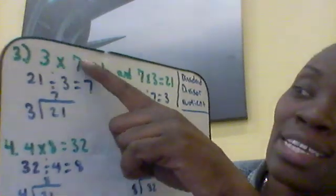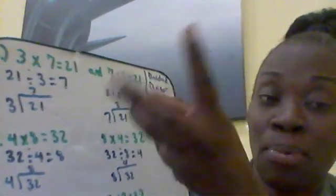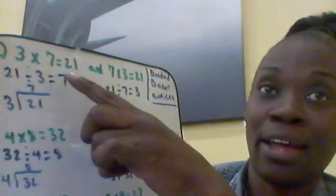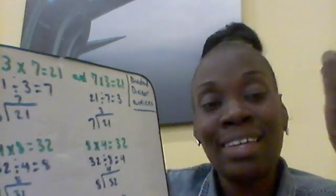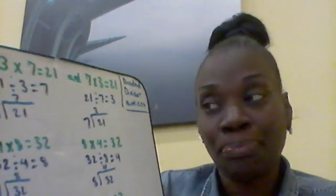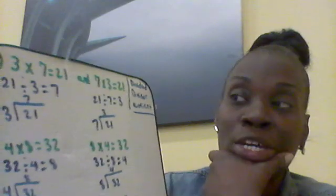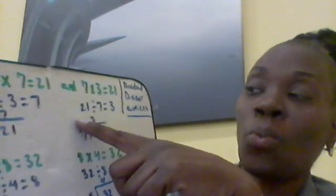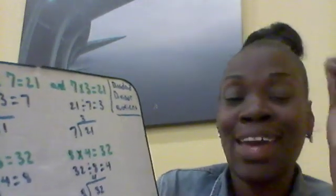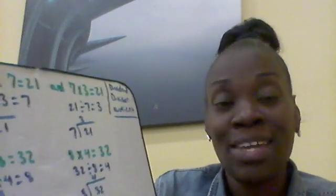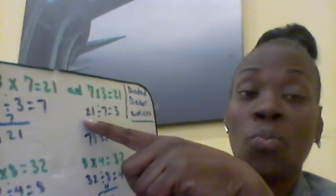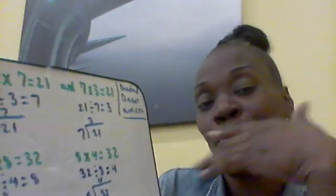If we're using the factors 3 and 7, and the product is 21, that means 21 divided by 3 equals 7. When you have a dividend of 21 and the divisor is 3, the answer is 7. Similarly, 21 divided by 7 equals 3. When you have a dividend of 21 and a divisor of 7, the quotient will be 3. So the divisor determines how many parts, and the quotient tells you how much is in each group.